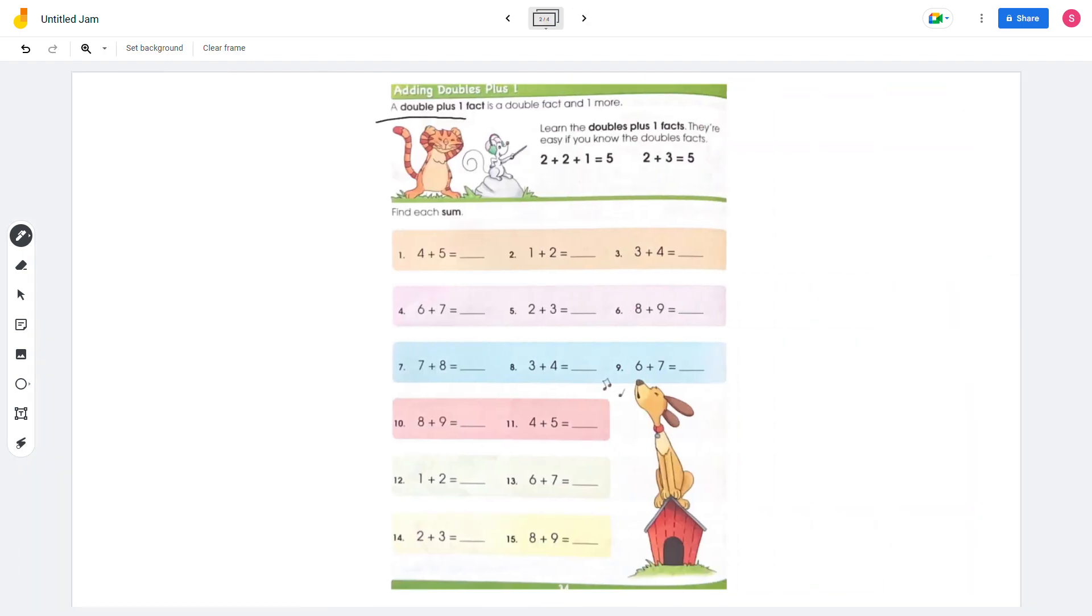a double plus 1 fact is a double fact and one more. Learn the doubles plus 1 facts. They are easy if you know the double facts. We did the double facts on the last page, and now we're gonna plus 1. So 2 plus 2 plus 1 is 5, which means 2 plus 3 is 5.